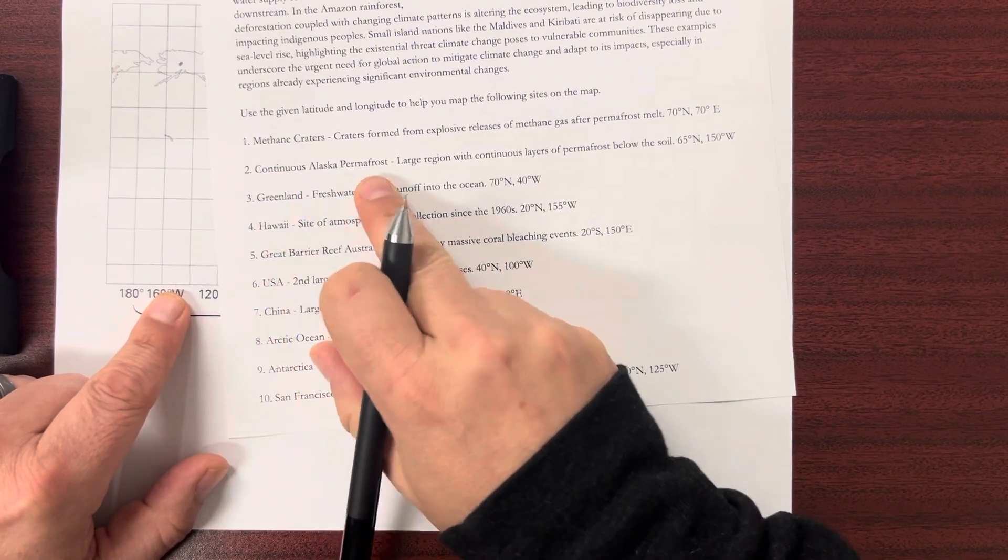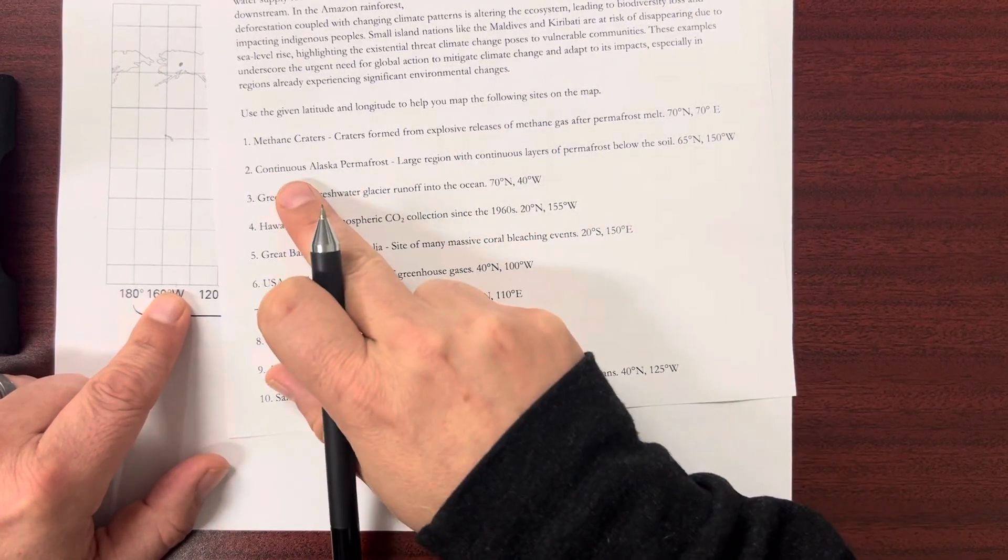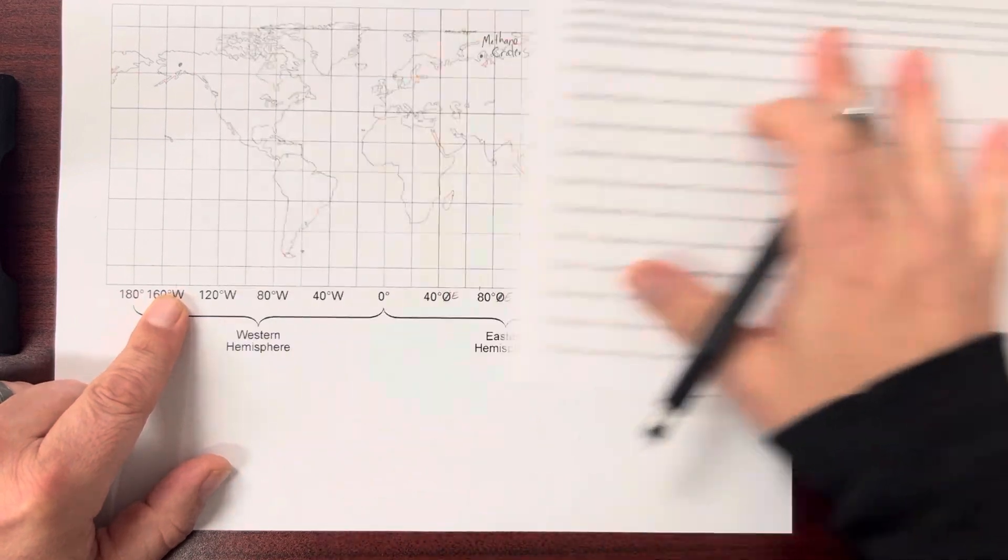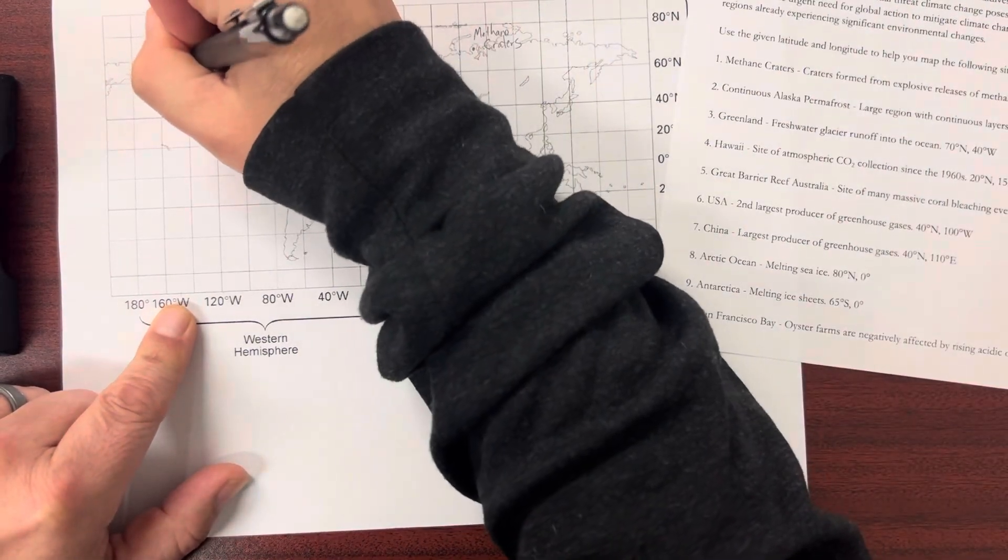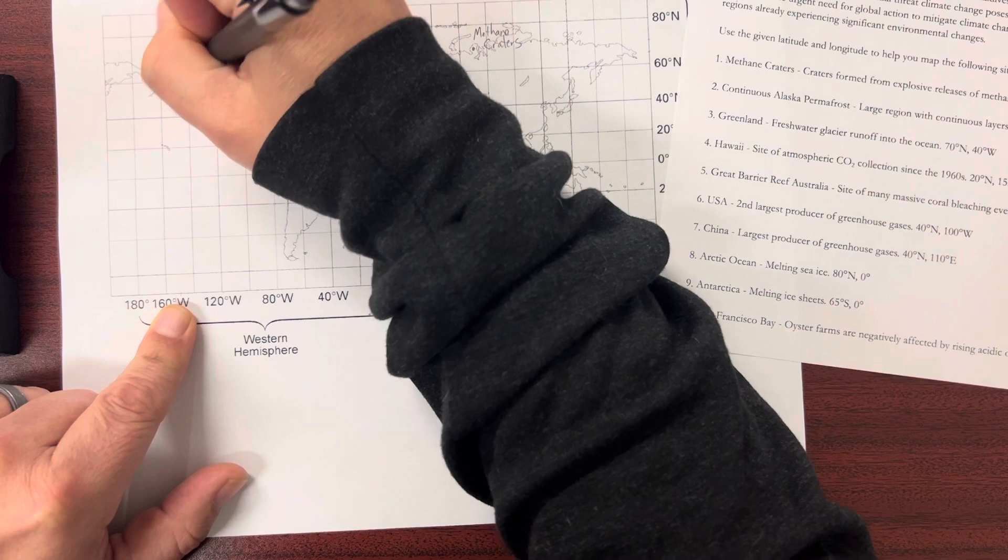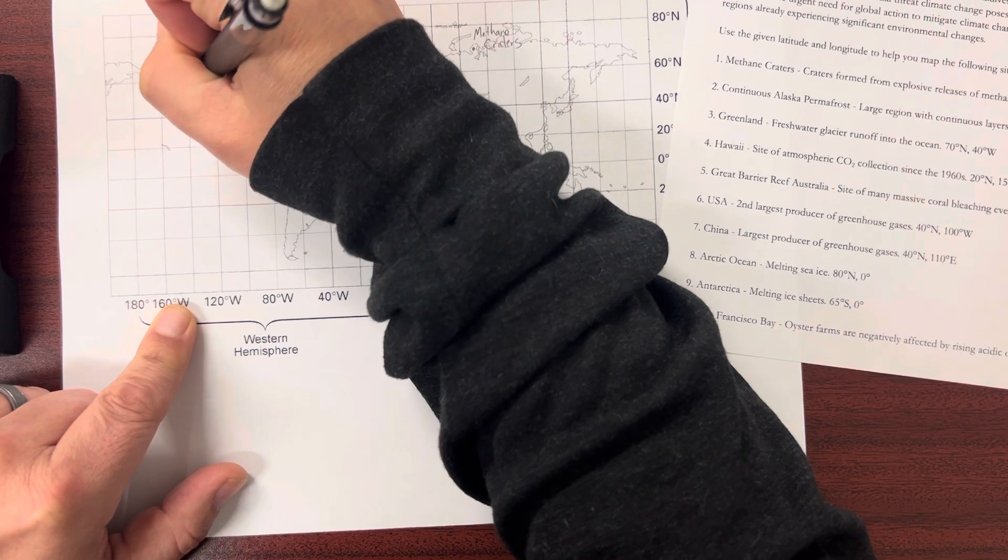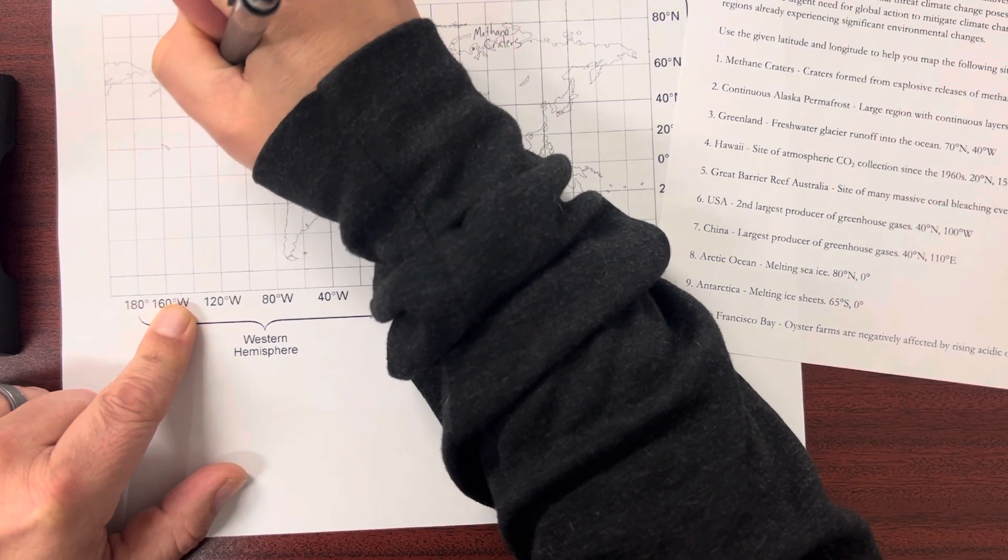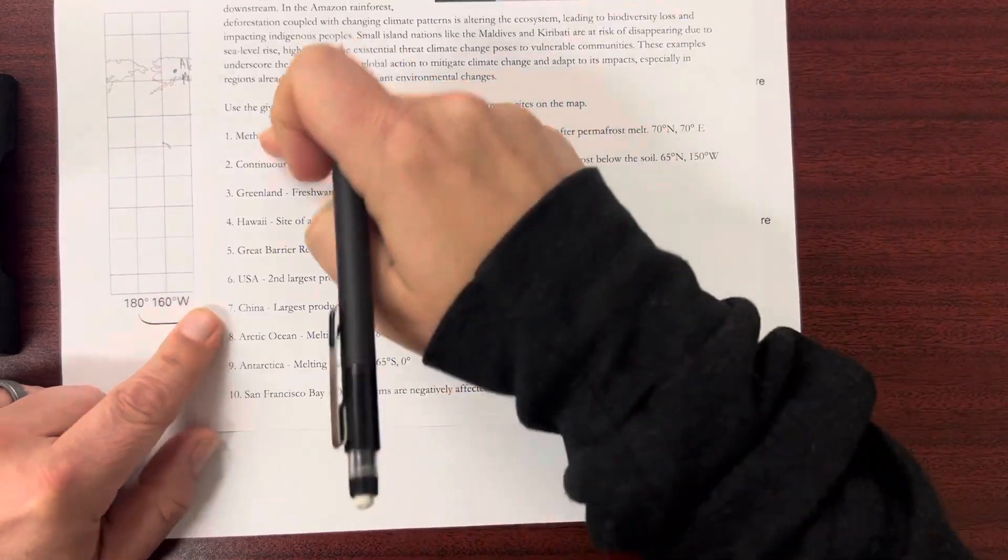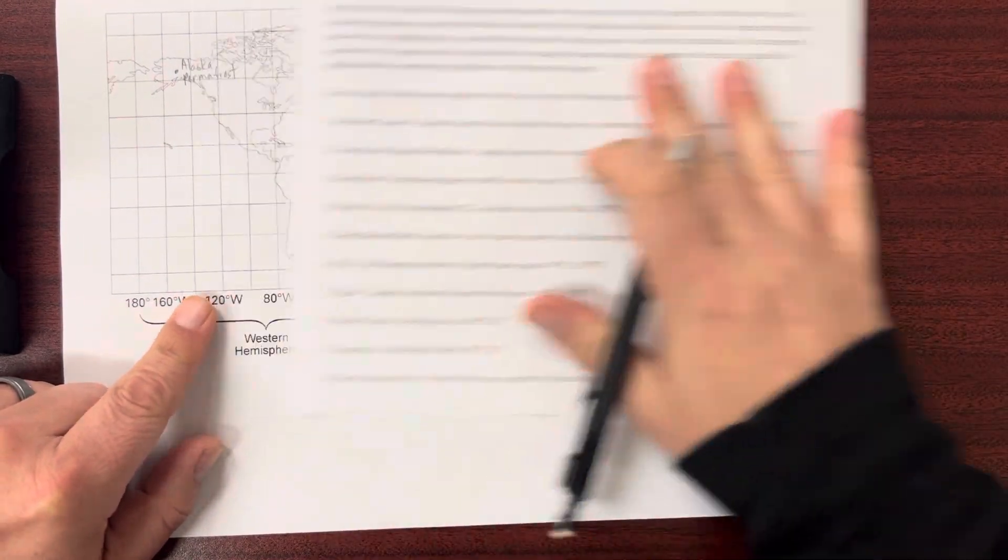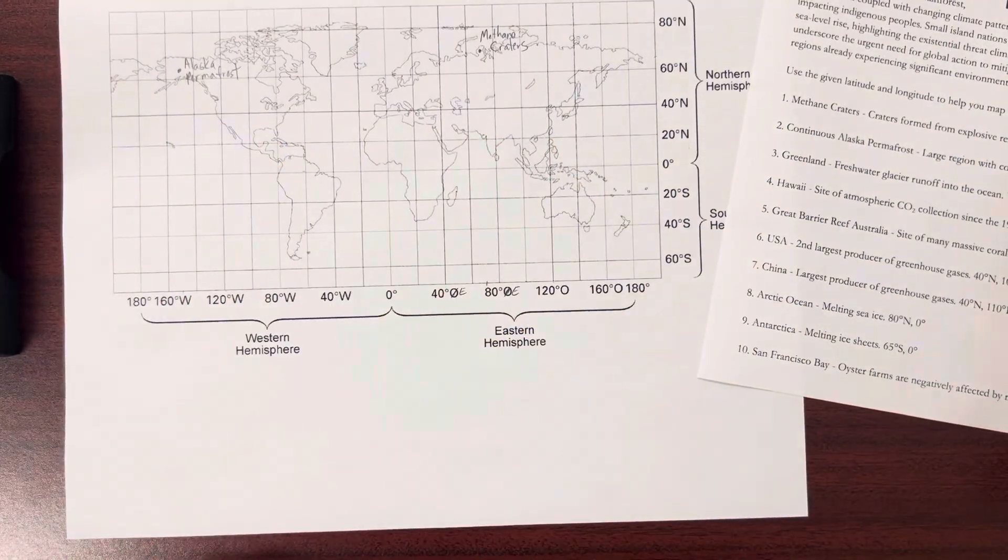And continuous Alaska permafrost. I'm just going to shorten this a little bit. We'll say Alaska permafrost. So do that for the rest of these items onto this map, and let me know if you have any questions. Thanks.